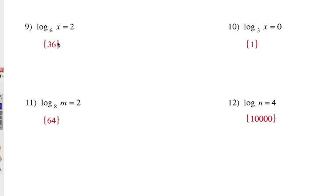Number 9 is 36, of course. Number 10 is 1. Now why is that? We have a base of 3 and the exponent is 0, and that gives us our x value. 3 to the 0 power, and you remember in algebra, anything to the 0 power is 1.